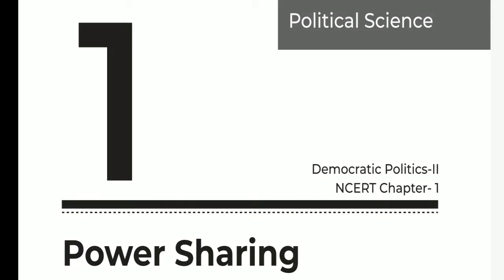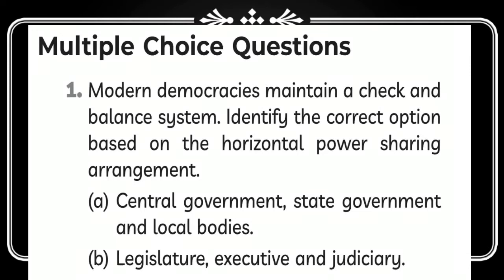We are going towards power sharing, which is the first chapter of the civics or political science book. In this chapter we will do all the questions, including one mark questions of the Edukart book, which will provide a wider view of knowledge. Let's start with the first multiple choice question. The first question is: modern democracy's maintenance of check and balance system — identify the correct option based on the horizontal power sharing arrangement.